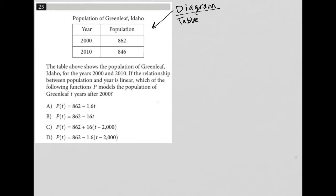So our table represents the population of Greenleaf, Idaho. Looks like we have the population in the year 2000 at 862 and the population in the year 2010 at 846.